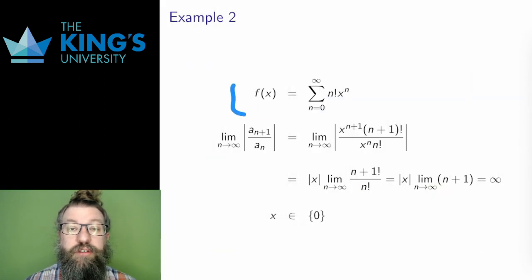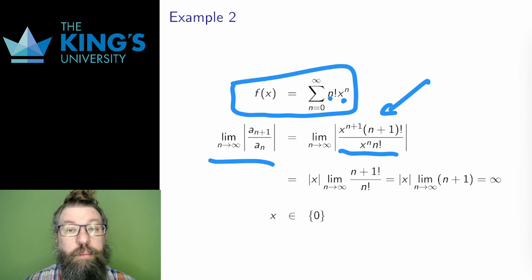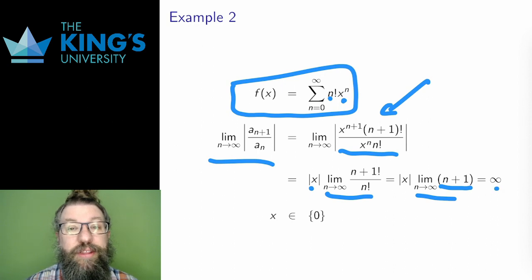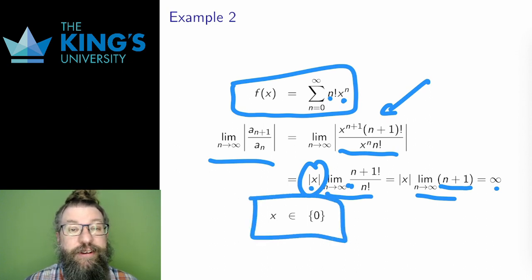Here's another example. The center is zero, so we just have powers of x with no alpha. The coefficient is n factorial. Again I use the ratio test. The ratio simplifies so that all but one power of x cancels — which always happens with power series in the ratio test — and I pull out the absolute value of x. The remaining ratio of factorials mostly cancels, leaving (n+1). The limit of this is infinity, which is no good at all. The only way the limit might not be infinity is if x equals zero exactly, which makes every term zero. So this series only converges if x equals zero — its domain is only the single point zero, and it is undefined everywhere else.